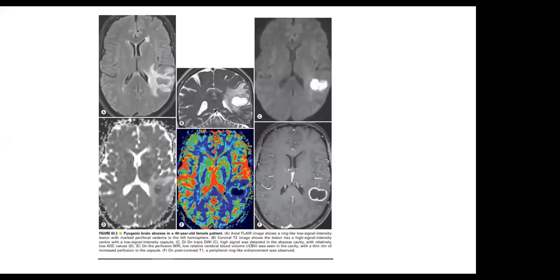Another case of pyogenic infection: FLAIR shows lesions where the content does not suppress like CSF, with marked surrounding vasogenic edema. T2 shows hyperintense signal content with hypointense capsule and vasogenic edema. Diffusion-weighted images and ADC map show restricted diffusion. MRI perfusion shows marked reduction in relative cerebral blood volume. T1 contrast shows ring enhancement.